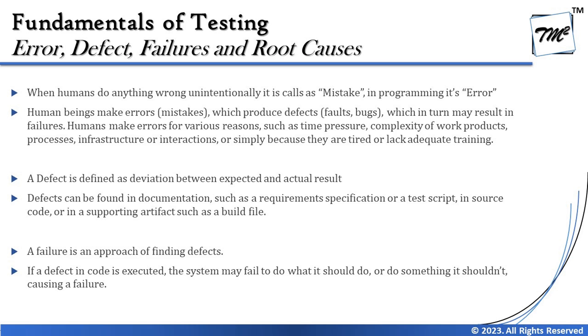Now we cover key terminology: error, mistake, defect, failure, and root cause. As per ISTQB, mistake and error are synonyms — mistake is a generic word, while error is relevant to the programming environment. When humans do anything wrong unintentionally, that is a mistake. When that same unintentional action occurs in a programming environment, we call it an error. The difference is just the context or environment.